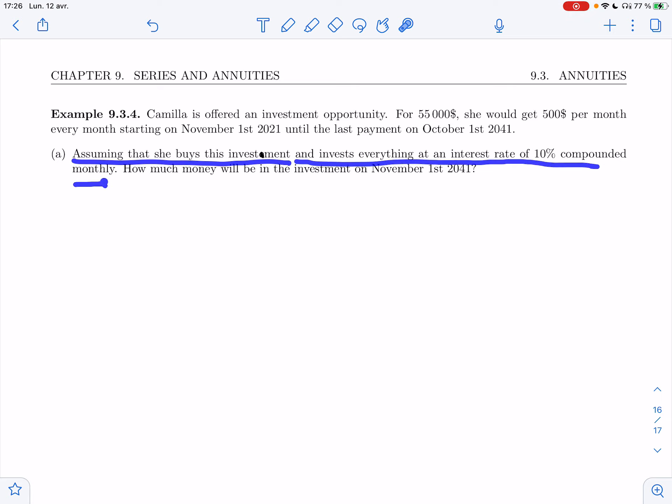Assume that she buys this investment and invests everything at an interest rate of 10% compounded monthly. So everything that she gets, every $500 that she gets, she immediately puts it in an account that gives her a 10% interest rate compounded monthly. How much money will be in the investment on November 1st, 2041? We start putting money in the bank account November 1st, 2021.